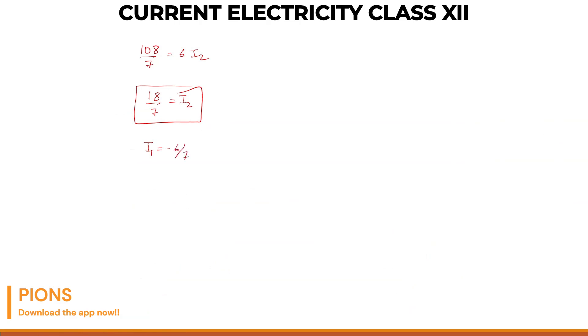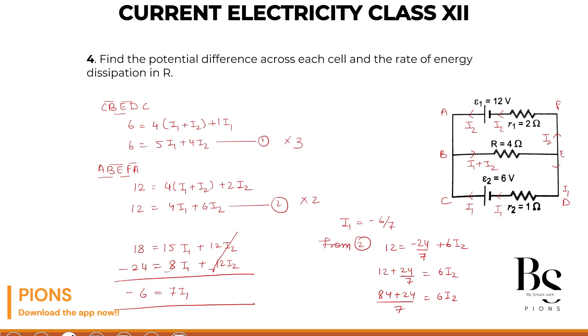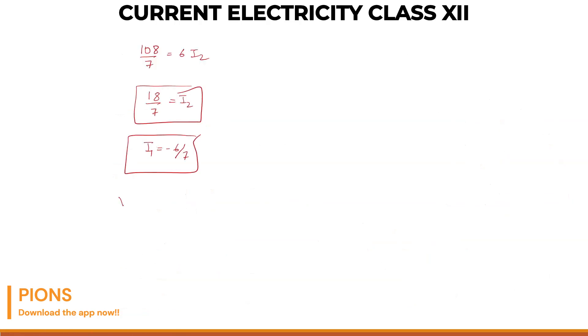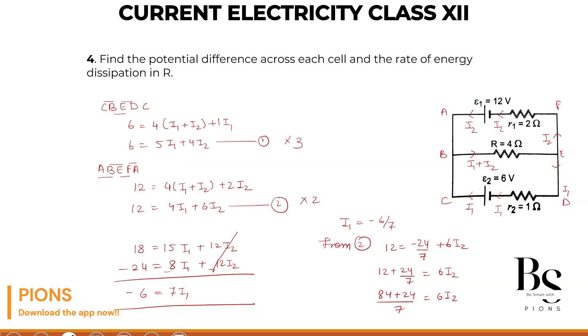Now let's go back to our circuit. They are asking the voltage across what? Terminal voltage is always voltage across this resistance R, the external resistance. Voltage will be current times resistance. What is the current here? I1 plus I2 into R. V equals 4 times I1 plus I2, because 4 is the resistance in that branch. So 4 times minus 6 by 7 plus 18 by 7 equals 4 times 12 by 7, which is 48 by 7 volts. That's the potential difference across each cell - common potential because they're connected in parallel.